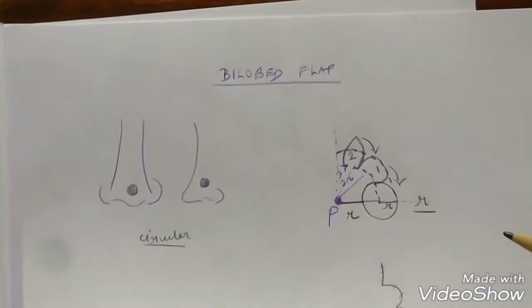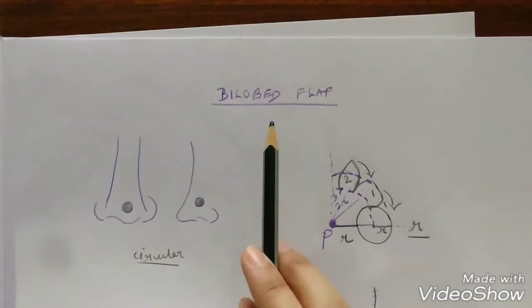The explanation of a bilobed flap is very well given in Volume 3 of Nilagin, Chapter 6, which is Aesthetic Nasal Reconstruction on page 143, that is a geometric bilobed flap.